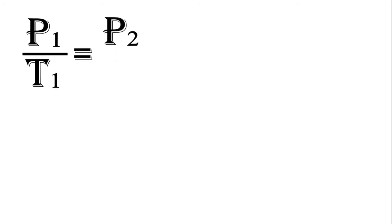And so again, our formula for Gay-Lussac's Law is P1 over T1 is equal to P2 over T2.